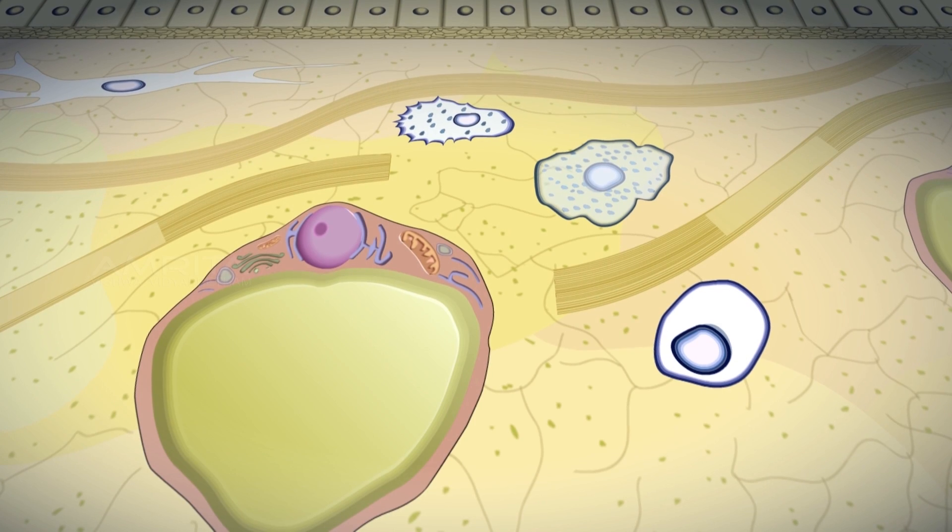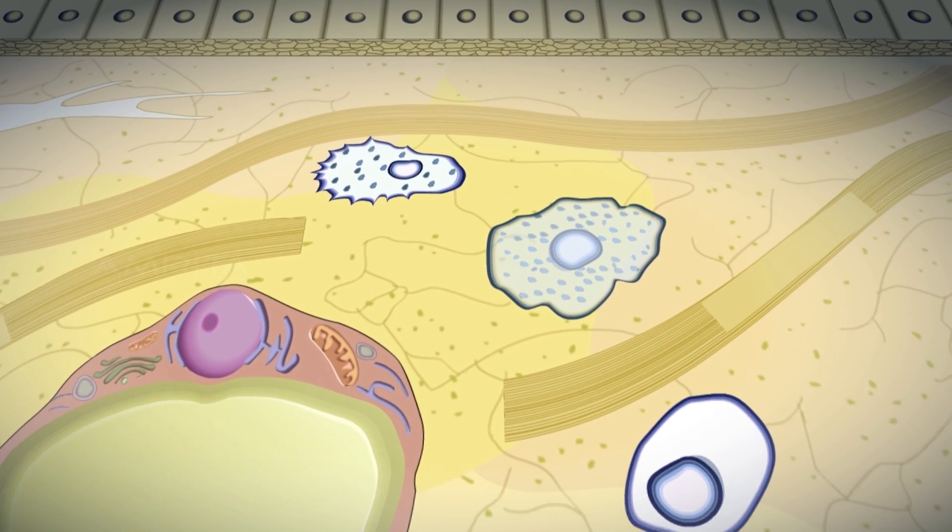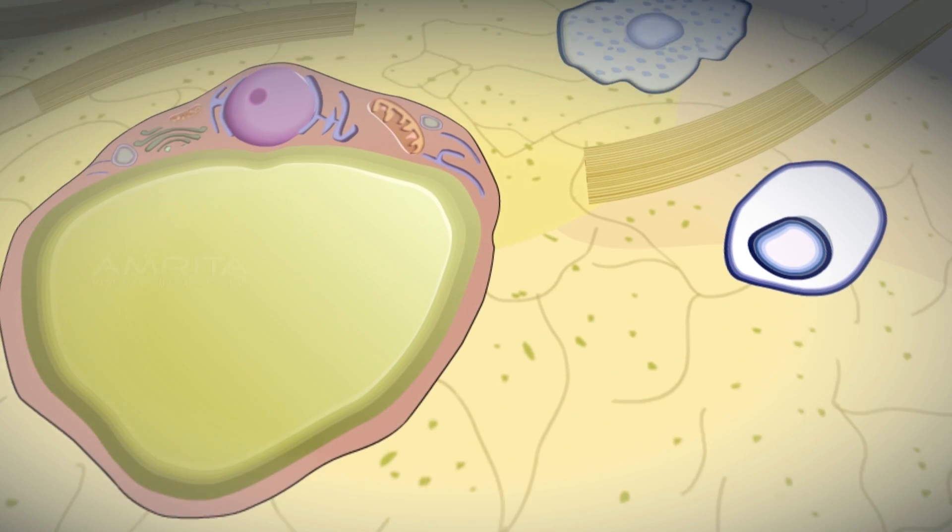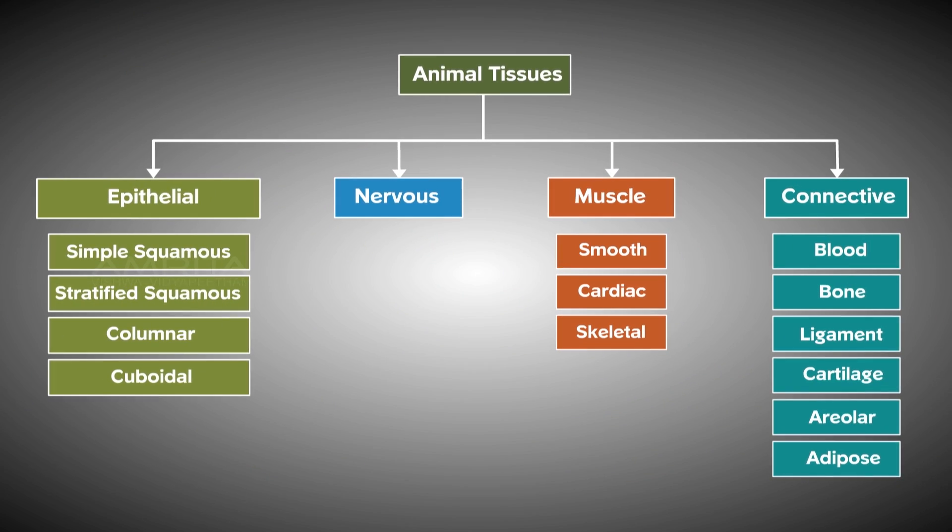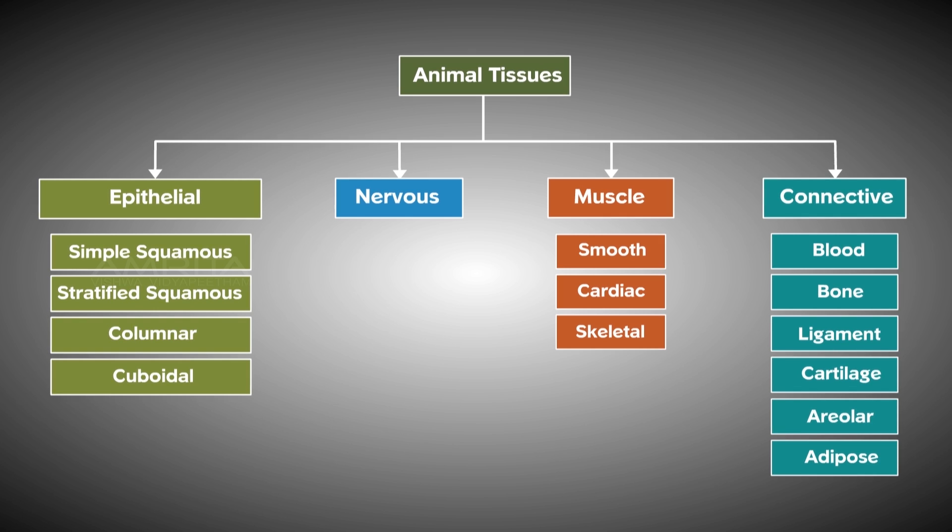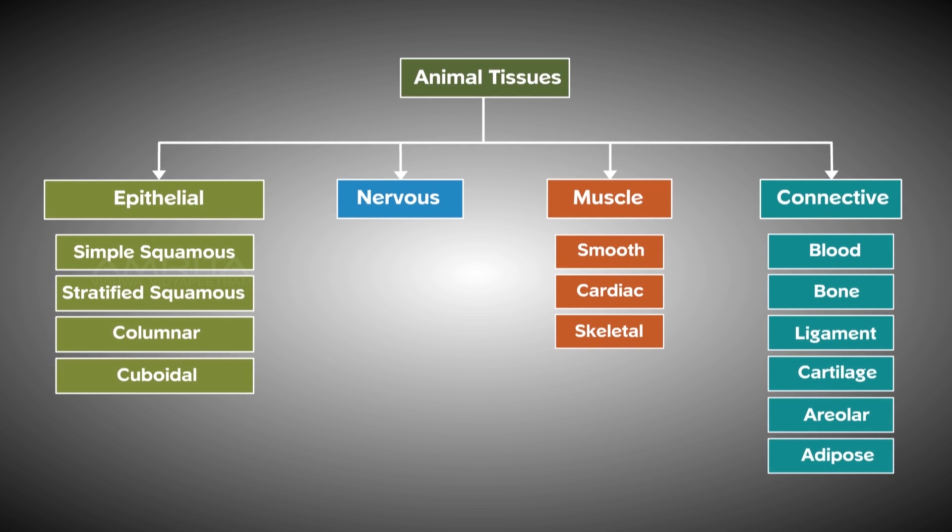Areolar fills the space inside the organs. It is gel-like with both elastic and non-elastic fibers. Adipose tissues store fat molecules. In conclusion, we have seen and understood the types of animal tissues, their subclassifications and their functions.